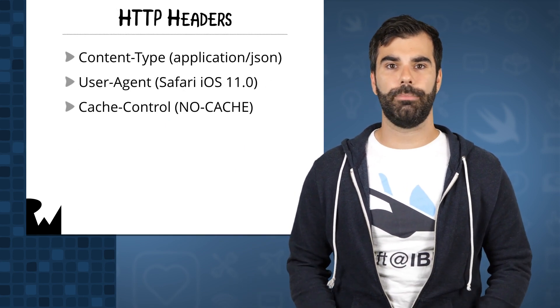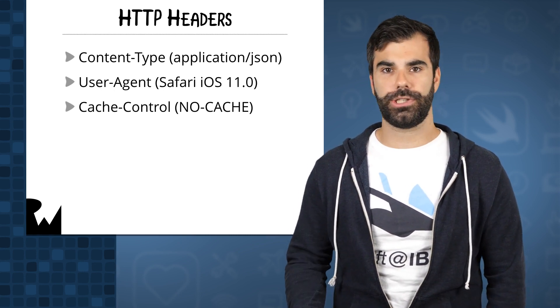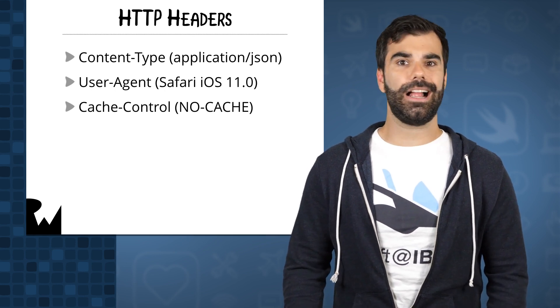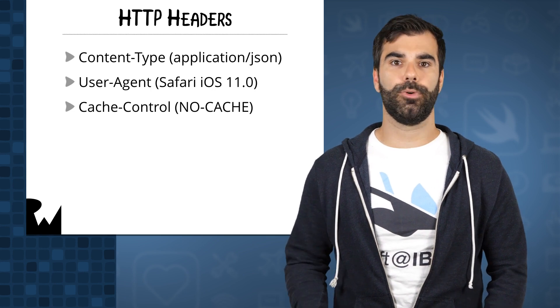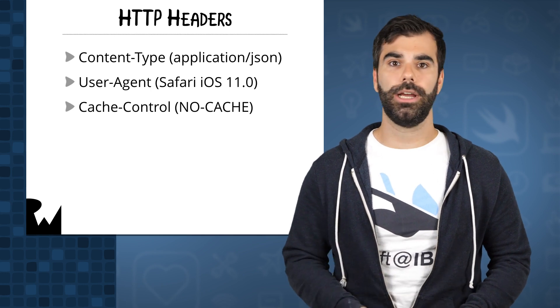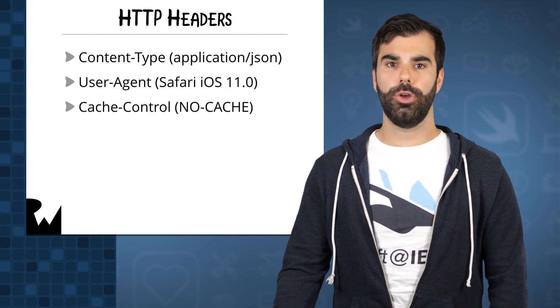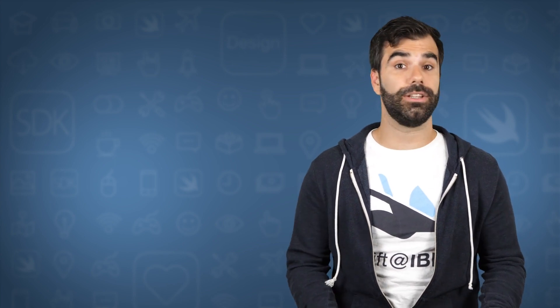A header is what should accompany every request and response. This covers metadata that is associated with the request or response. You can think of this as data about your data. One important header that you'll work with in this course is for content type. You'll mostly be using this with application slash JSON, which means that data you send over HTTP will consist of JSON. I haven't covered every single thing you need to know about HTTP, but here's hoping you now have enough to feel comfortable tackling the rest of this course.